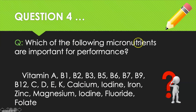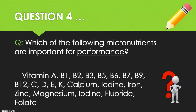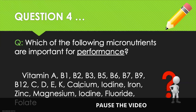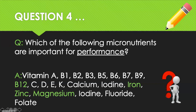Question four: which of the following micronutrients are important for performance? Write down the list and circle or underline your answers. The answers are: Vitamin B12, zinc, iron, and magnesium. These relate to muscles and energy production.